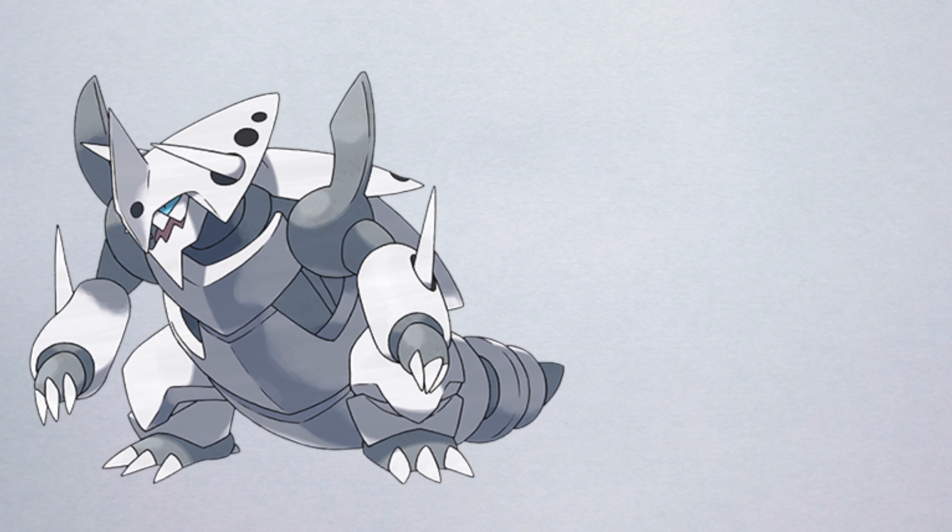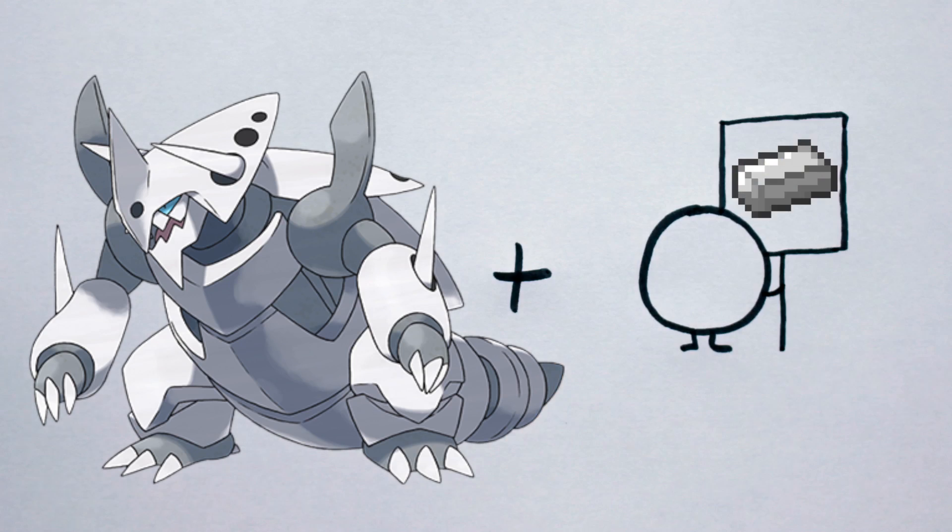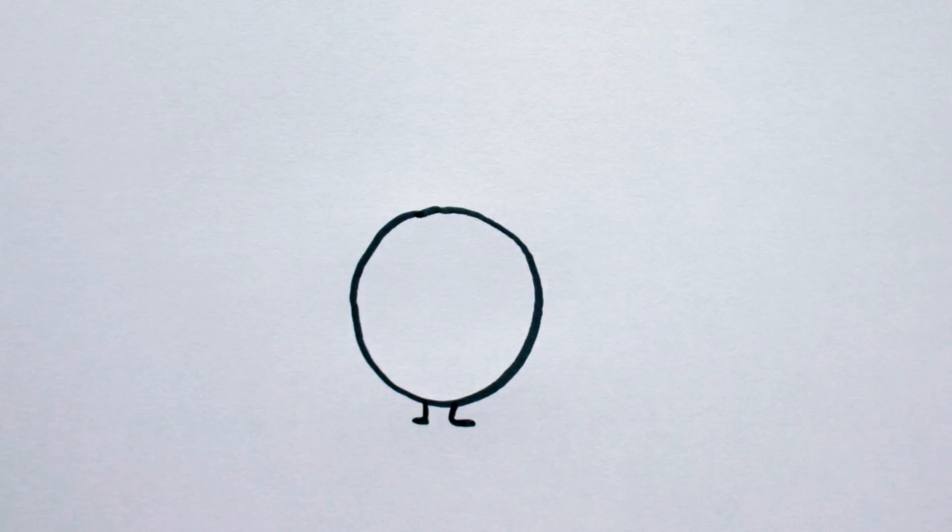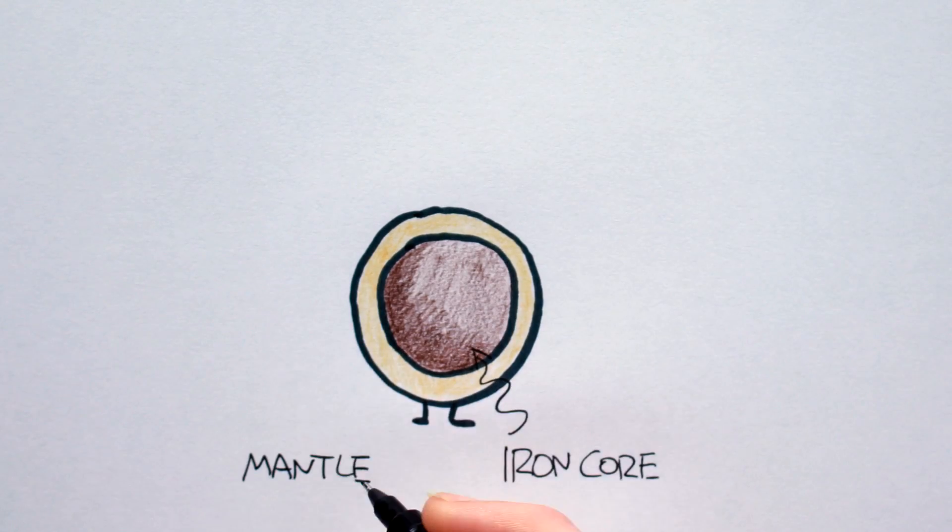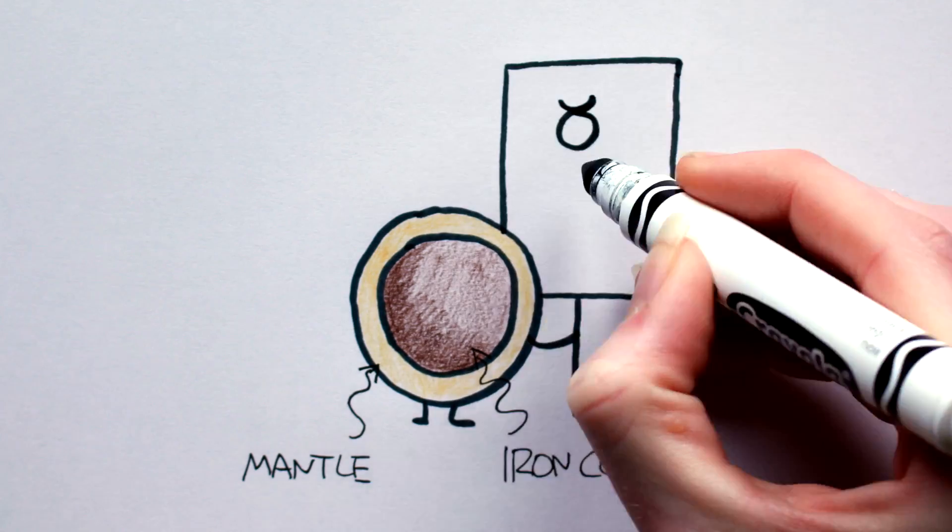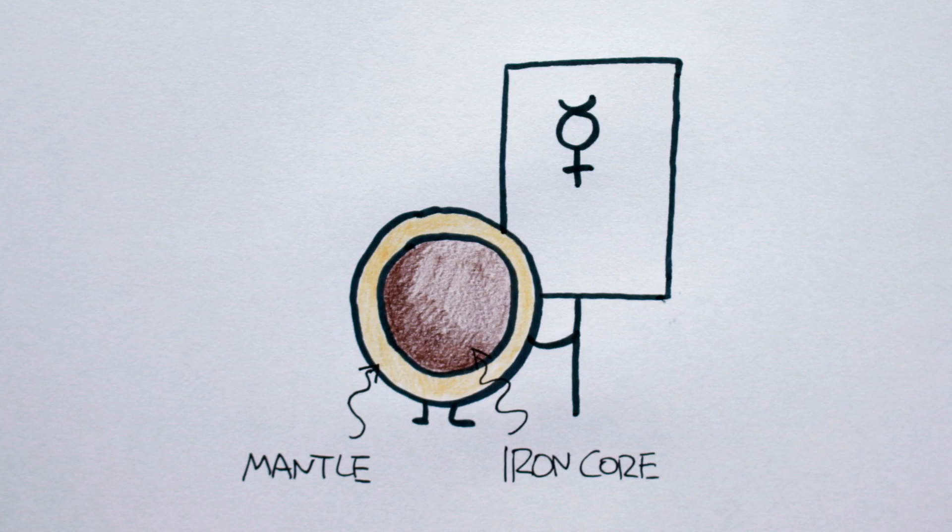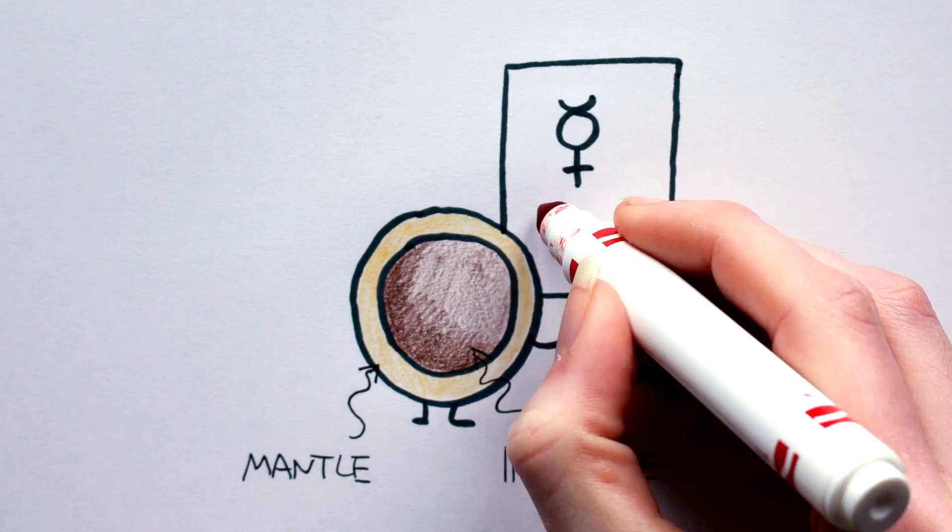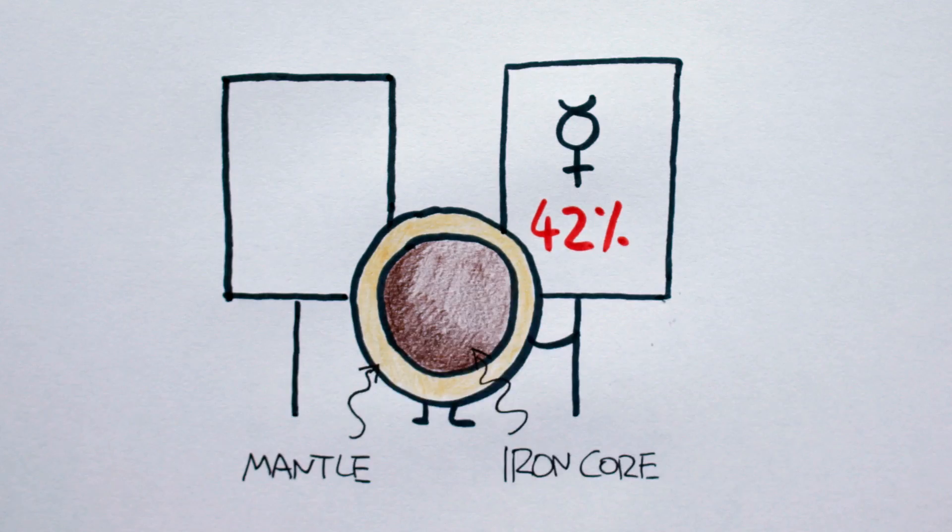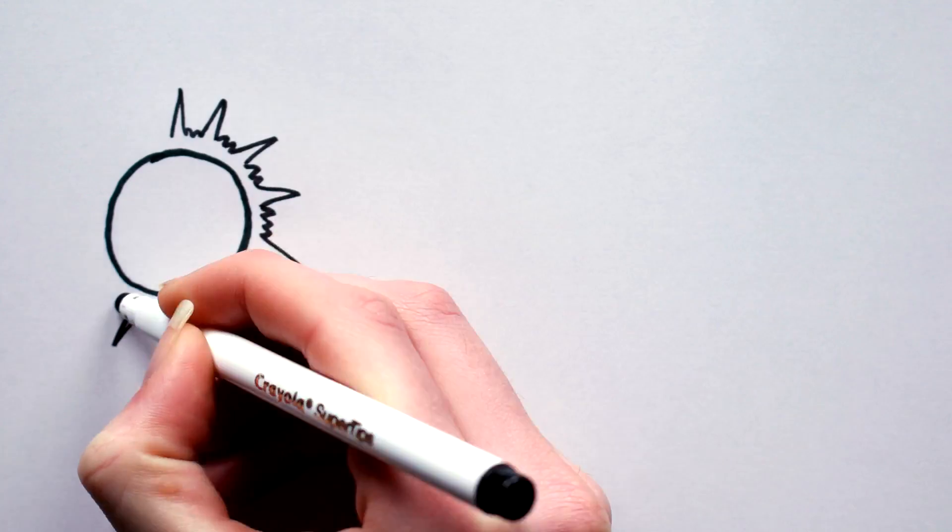An Iron planet is a hypothetical type of planet dominated by an Iron core. Mercury is the closest our system comes to having an Iron planet, with its Iron core accounting for about 42% of its volume, compared to Earth's 17%. Iron planets could form in one of two ways.